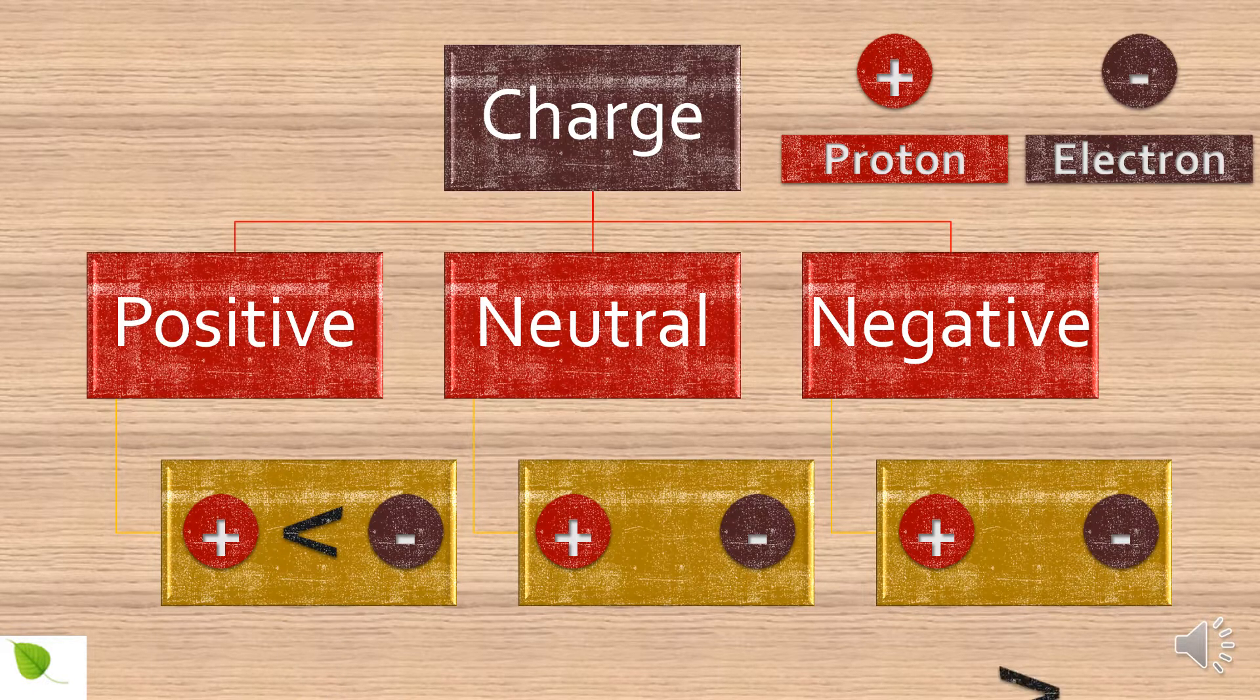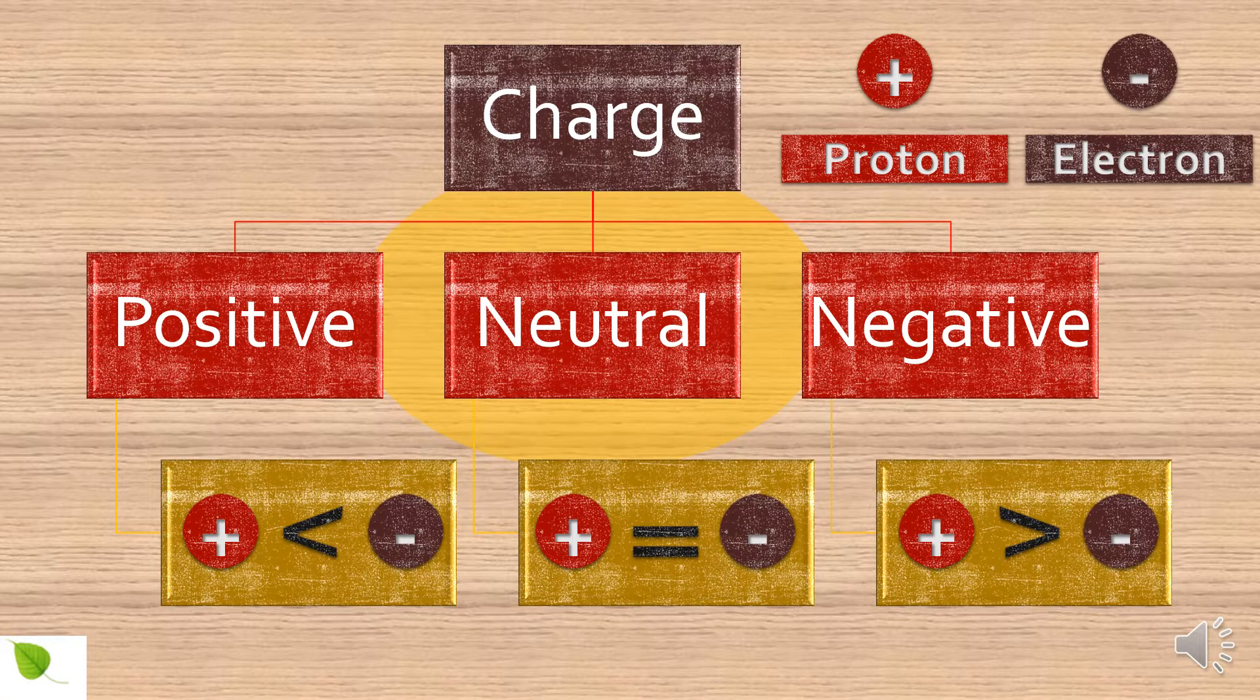More protons mean positive charge, more electrons mean negative charge, but an equal number of protons and electrons make it neutral. This is the usual state for most things around you.